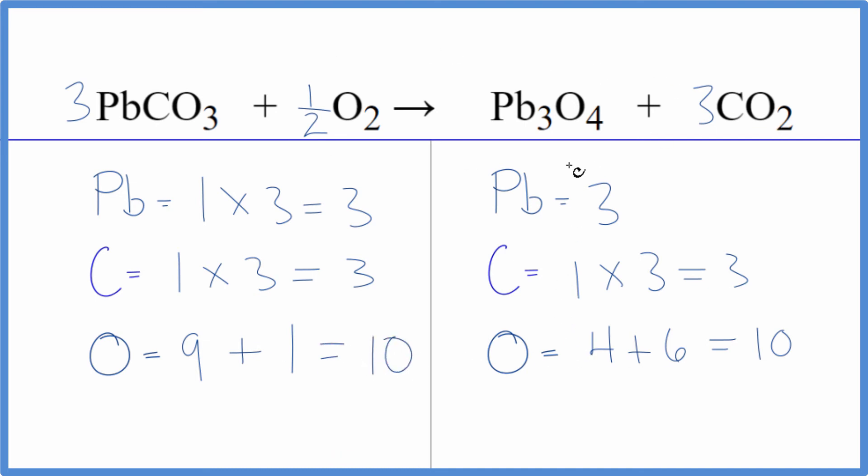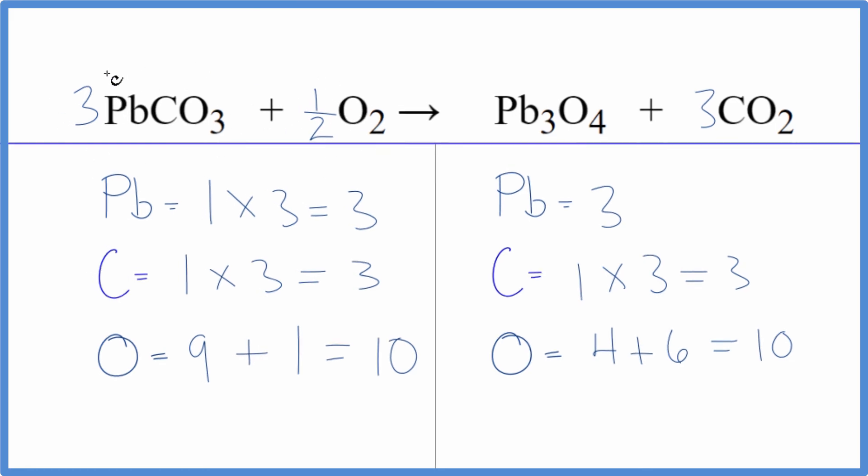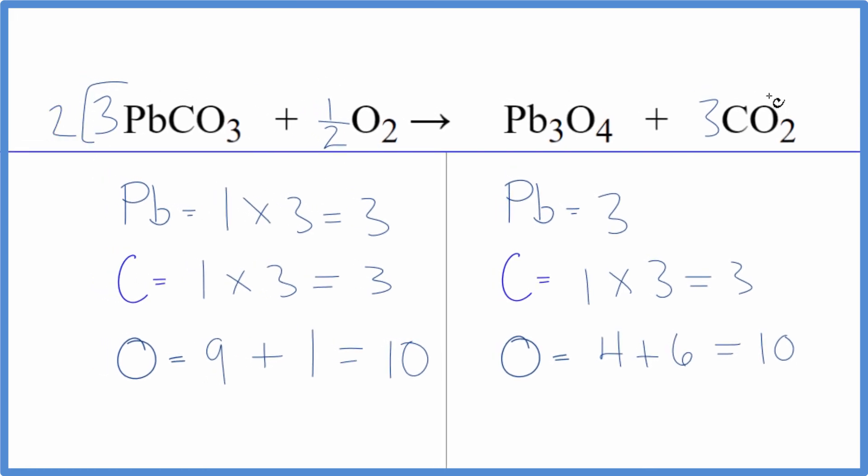These ratios up here, they are correct for this equation. Some teachers don't like to have fractional coefficients, but you could just multiply everything by 2. So 2 times 3 is 6. 2 times 1 half, that's just 1. 2 times 1 is 2. And then 2 times 3 is 6.